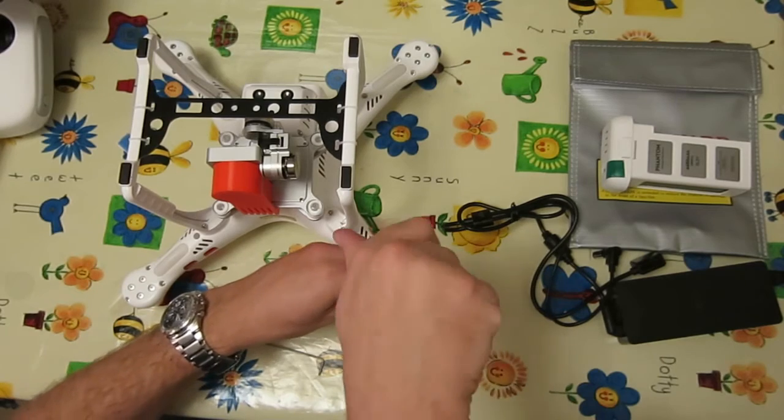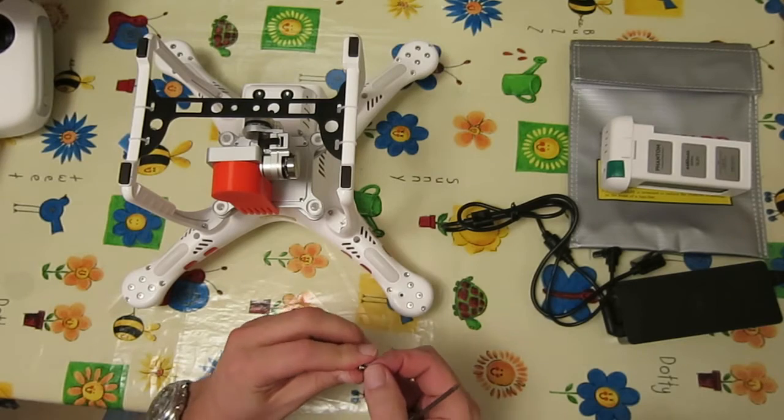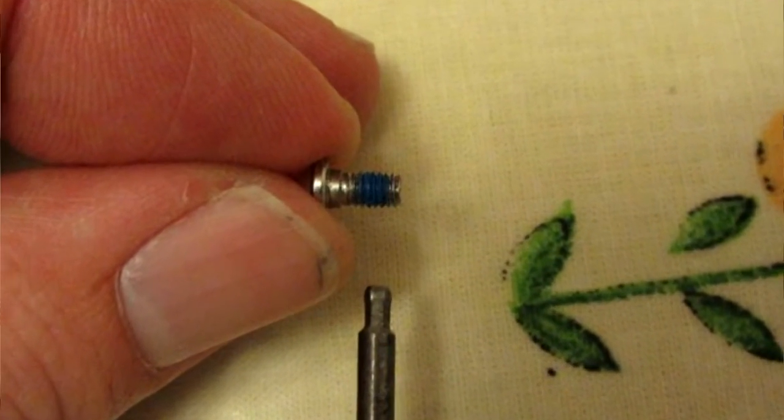So if I just show you, they've got thread lock on the screws already, and they're screwing into a metal motor. You can see the little blue stripe there is thread lock from the factory.